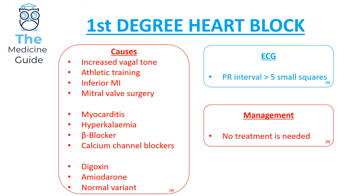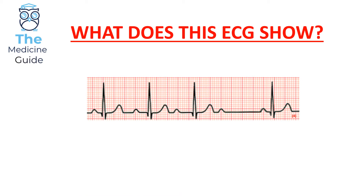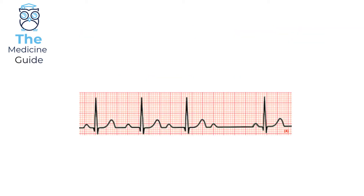Let's have a look at the next ECG. I'll give you 10 seconds to pick out the key features and write down what you think is the underlying heart block. Looking at this ECG, I like to confirm exactly where the P waves are to clarify that this ECG is in sinus rhythm. I also like to confirm exactly where the QRS complexes are, and clarify that each P wave is followed by a QRS complex — but as you can see, that isn't necessarily the case here.